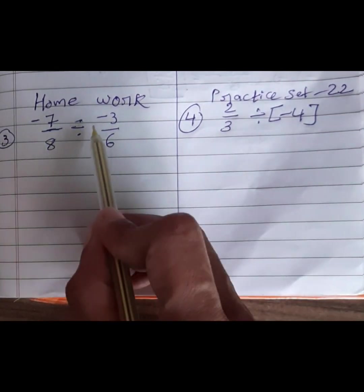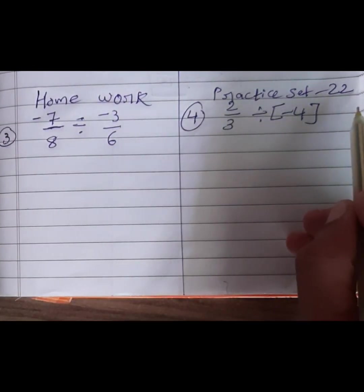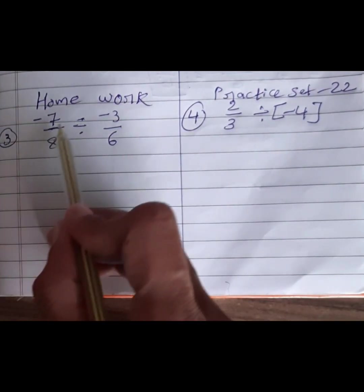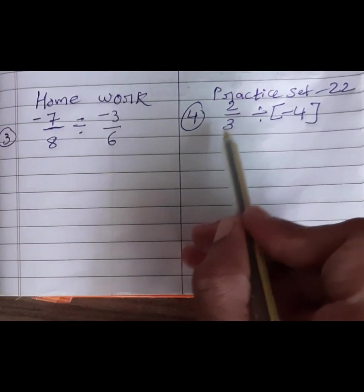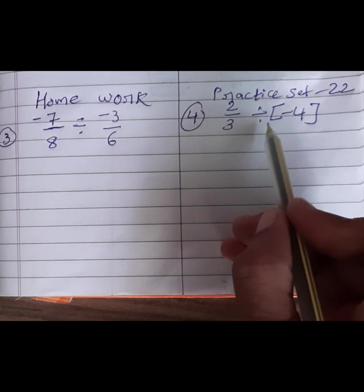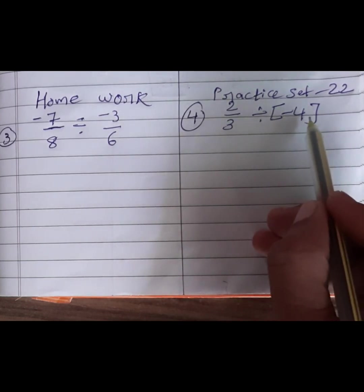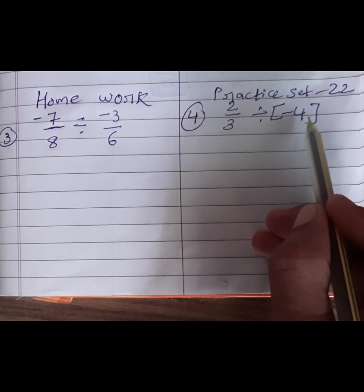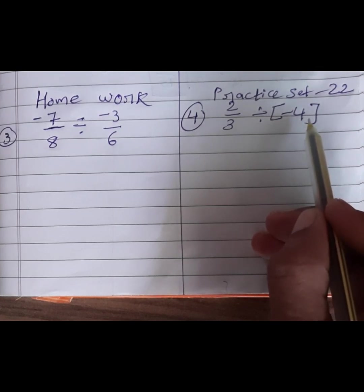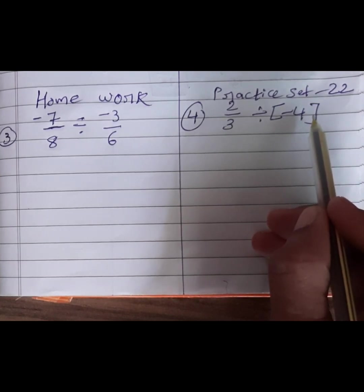Next, homework from Practice Set 22: third question — minus 7 by 8 divided by minus 3 by 6; fourth question — 2 by 3 divided by minus 4. Solve these questions, children, and mention your answers in the comments box. If you understood this explanation, please like my video and share with your friends. If you have not subscribed to my channel, please subscribe. Thank you for watching.